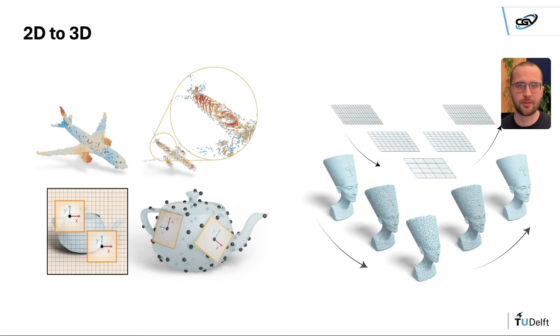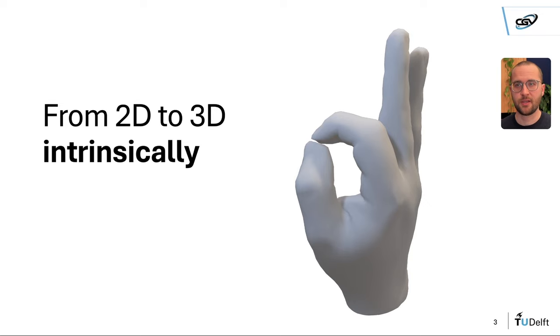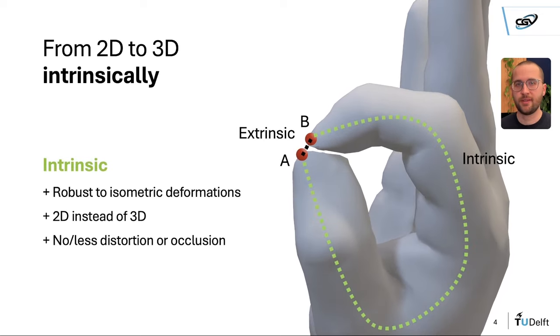My name is Ruben Wiersma, and in my thesis I transfer key algorithms from learning and computing on 2D grids to curved surfaces. I argue for making this transition with intrinsic operations, which means you operate from within the surface, like the perspective of an ant walking on your hand.